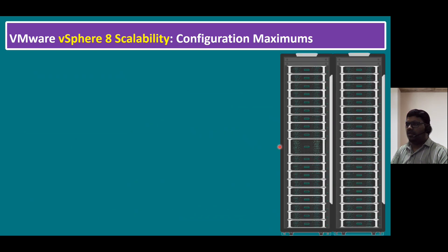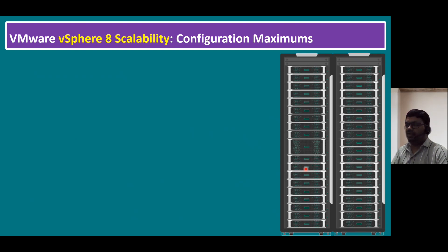Now let's quickly recap VMware vSphere 8 scalability configuration maximums. One key point: VMware has given official configuration maximums, but in a real-world scenario, if you want to increase a virtual machine's CPU, memory, disk, or virtual GPU devices, always make sure you have enough resources within your data center. If you are increasing CPUs for a production workload, ensure your physical data center has multiple racks with multiple ESXi physical servers and that your ESXi hosts physically have enough resources before increasing configuration at the virtual machine layer. Always make sure we have enough physical resources — only then can we increase at the virtual layer. That is a basic fundamental.